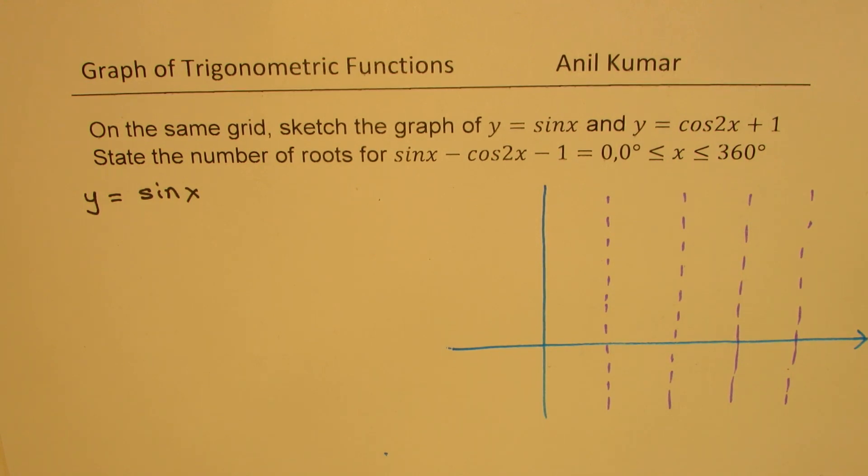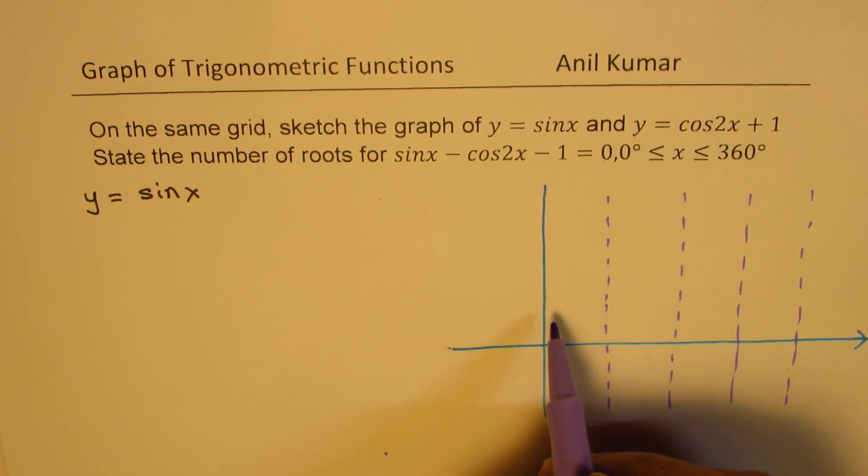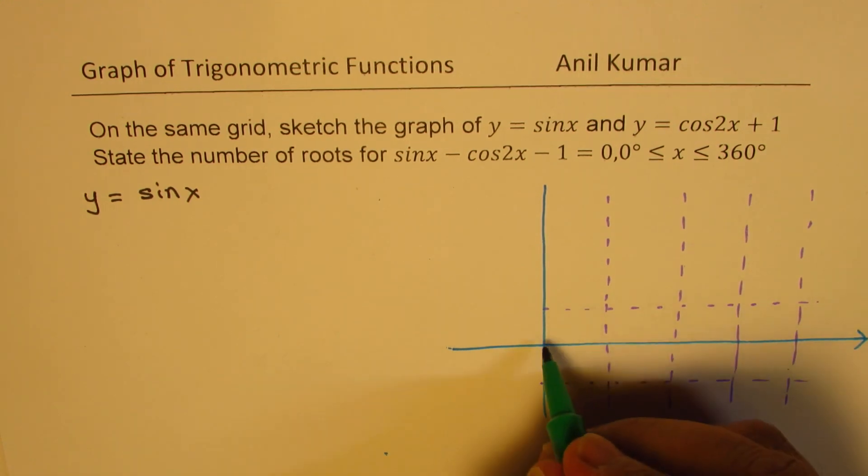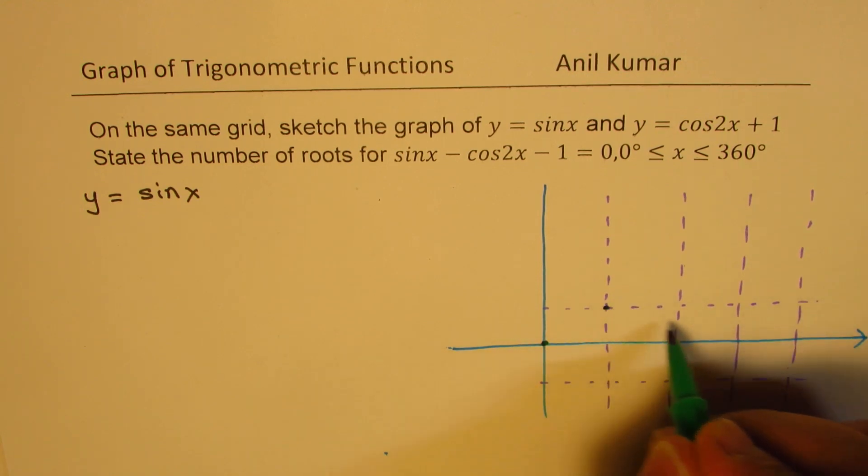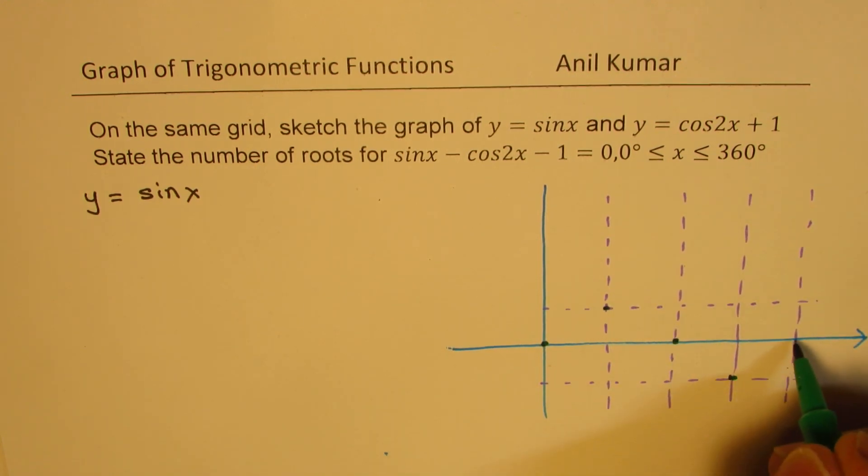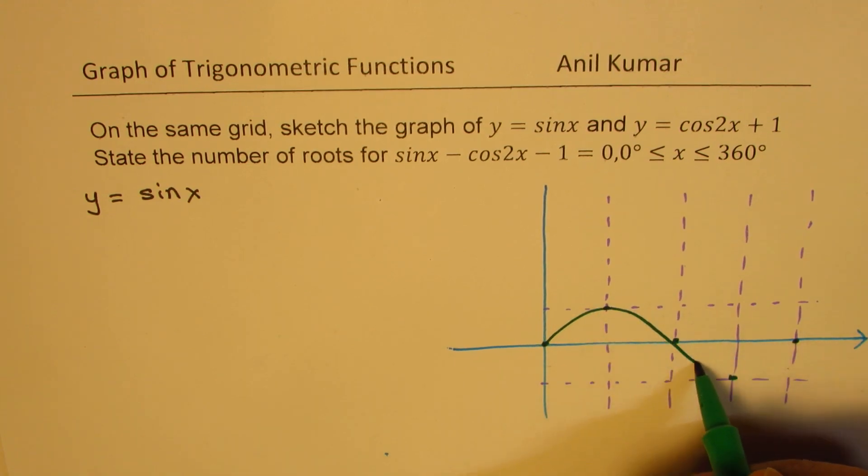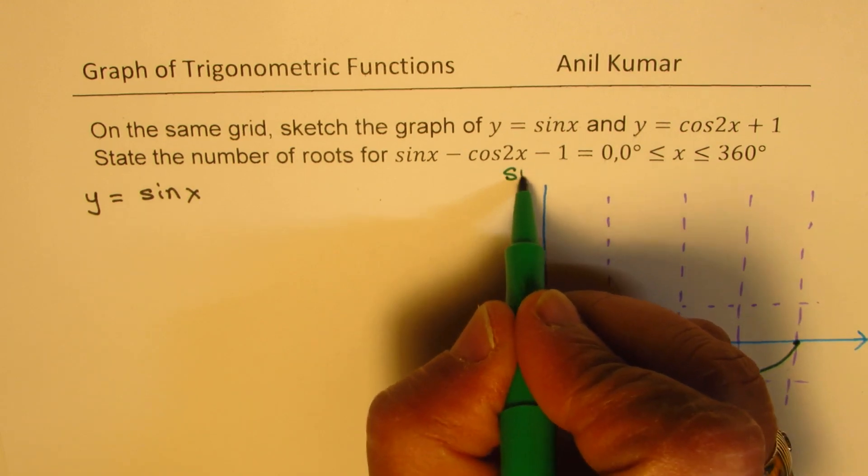As you know, the sin function has a maximum of 1 and minimum of minus 1. So it oscillates between plus and minus 1. The graph starts with 0, goes up to 1, comes back to 0, minus 1 and 0. So you can sketch sin function very easily like this. The graph in green is sin x for me.